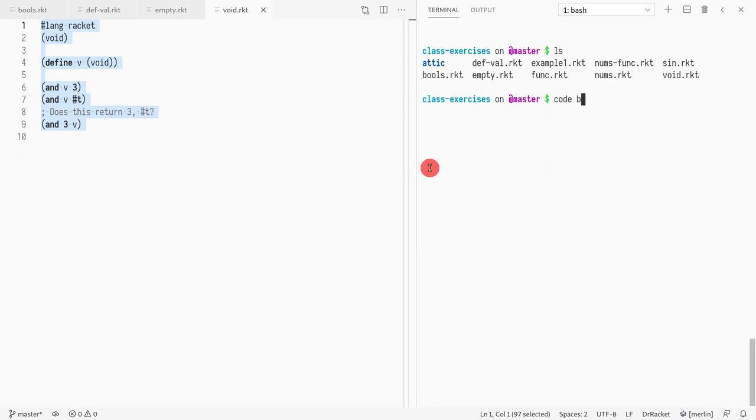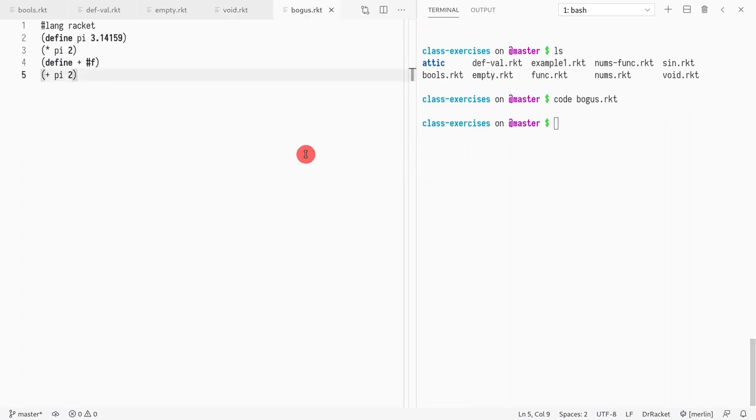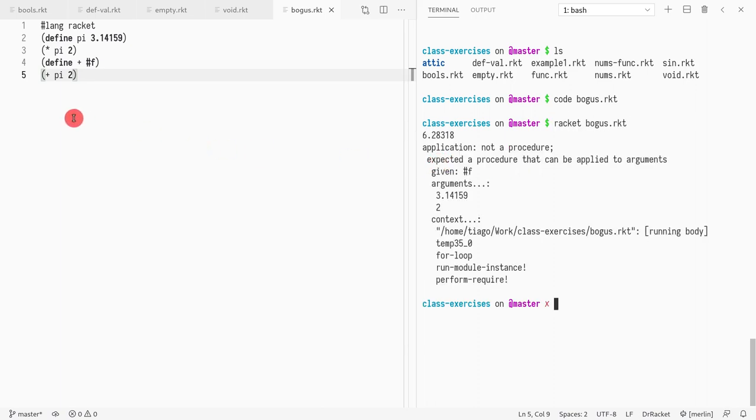Let me just write that example. Bogus.racket. So if I write this, this is my bogus program. And if I run it, what you will see is that I have 6.28318, which is what you would expect from this expression. And now because I redefined plus to be something else, I get this error. Application is in Racket lingo calling a function. Procedure again is function. So it's saying I can't call a function because given, because you've given me a false. So false is not a function and therefore cannot be called.